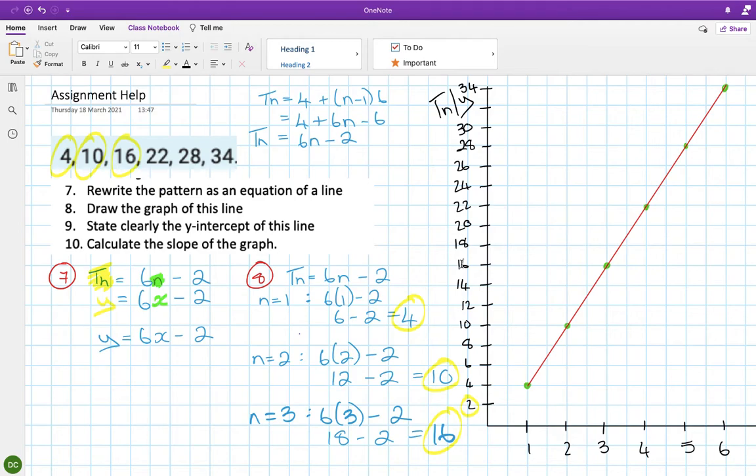Yeah? Okay, state clearly the y-intercept of the graph. So, this is for part 9. The y-intercept is the n equal to 0 term. Okay, so based on this being the first term, this being the second term, this being the third term, the 0 term would come before the 4. So, you need to go, what's this going up in 6s? So, you'd need to go down by 6. So, that would bring you to minus 2. So, the y-intercept is minus 2.